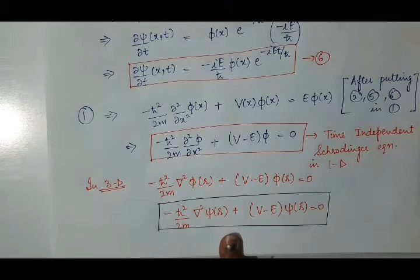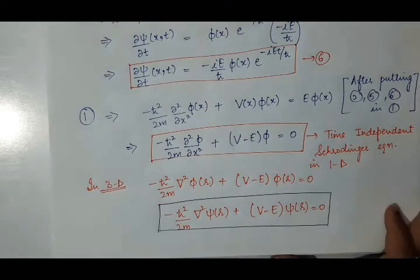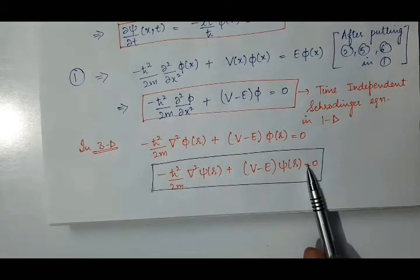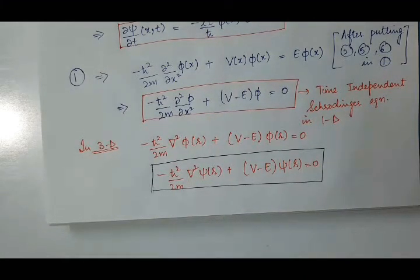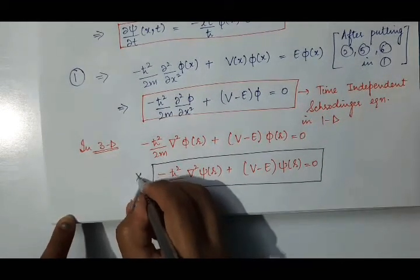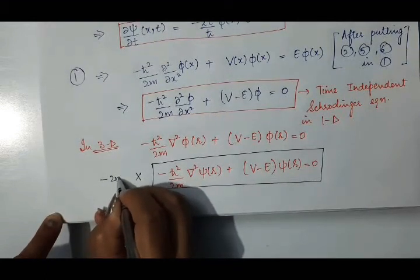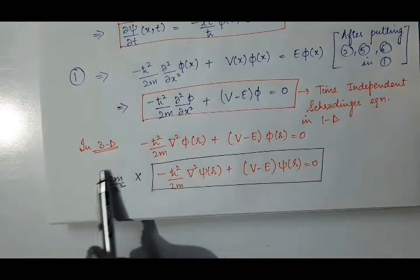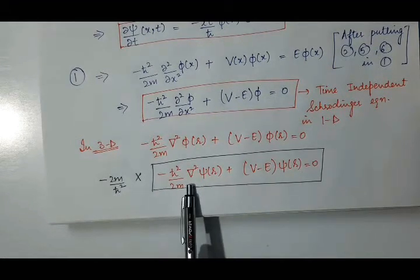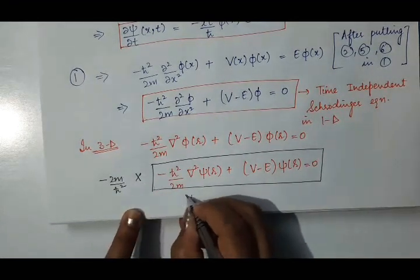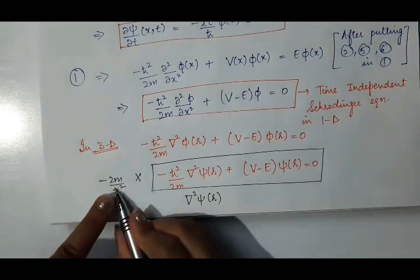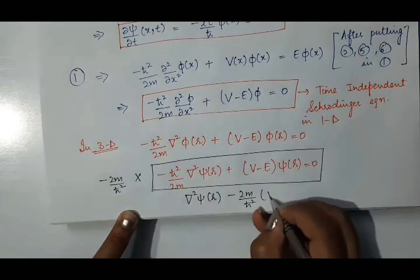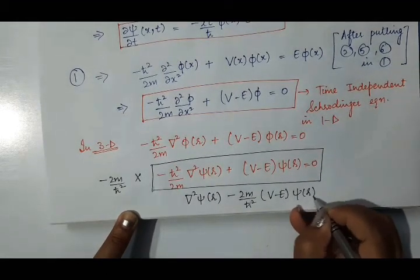Now we will rearrange it again. Multiply this whole equation by 2m and divide it by minus h-cut square, or equivalently multiply by minus 2m by h-cut square. When you multiply these terms, del square psi r will remain, and we will have minus 2m by h-cut square, v minus e, psi r, equal to 0.